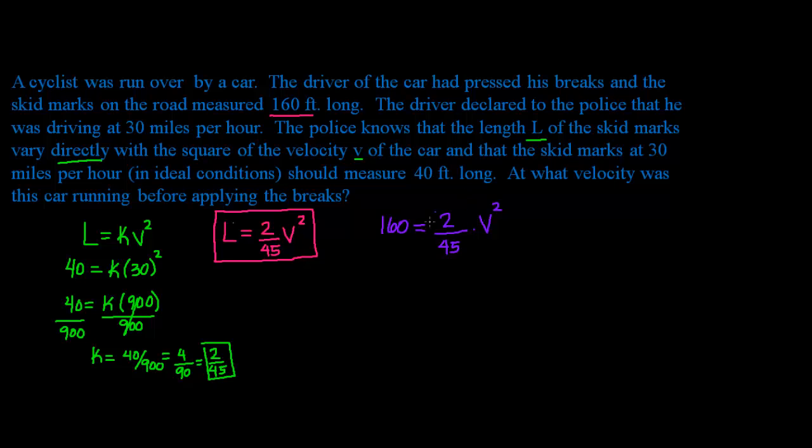Now I want to isolate V, so that means I have to get rid of this. I can cross-multiply 45 and 160, and that gives you equals 2 times V squared. And now I can divide by 2, both sides by 2. And I get that V squared is equal to 160 times 45 over 2.